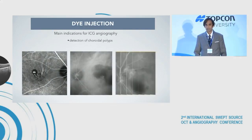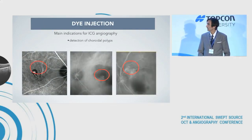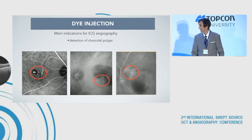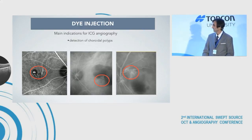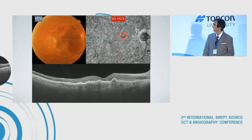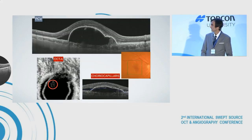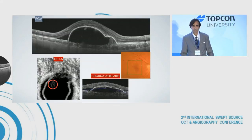The same applies to ICG angiography. We know that ICG angiography is the gold standard to detect choroidal polyps, and it's very useful in many patients. But nowadays, with multimodal imaging, with the MFAS technology in some cases, and with OCT angiography in the choriocapillaris layer, it's possible to detect the polyps as well without dye injection.